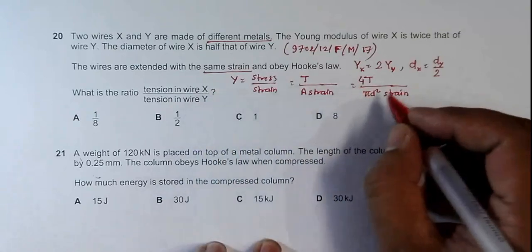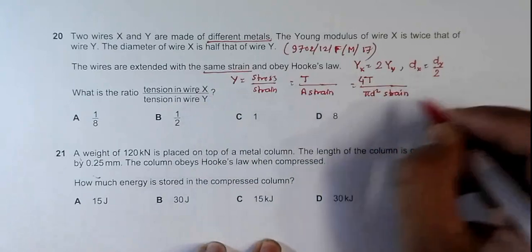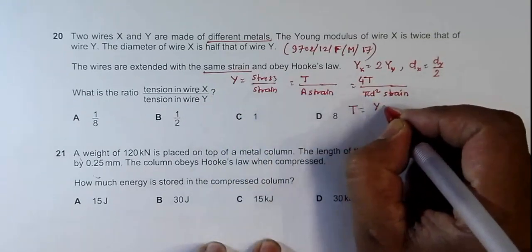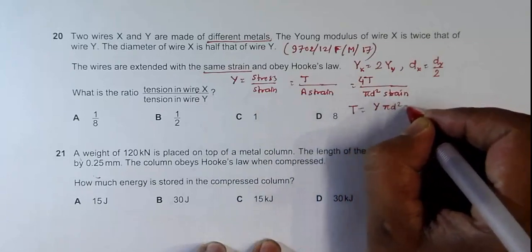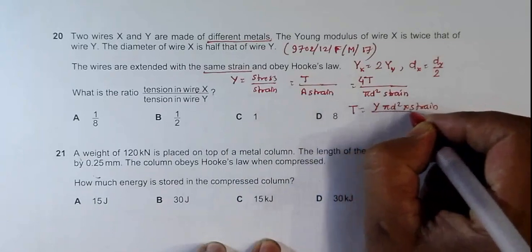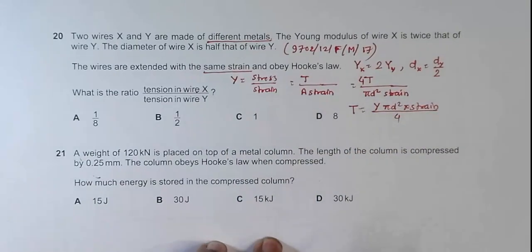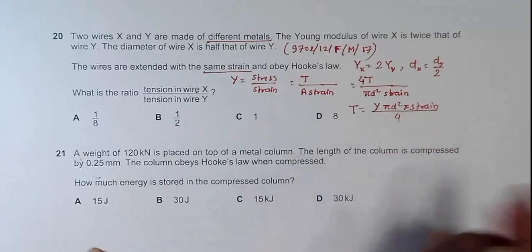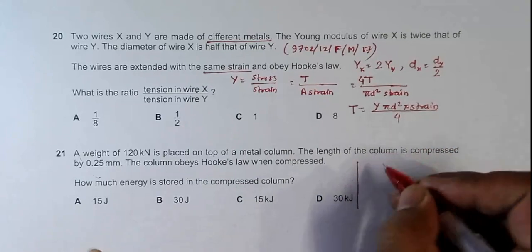Tension equals Y times pi D squared times strain divided by 4. Now if I calculate the ratio, the ratio of tension in X to tension in Y...